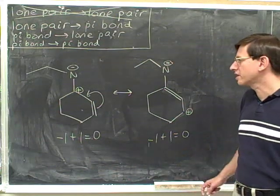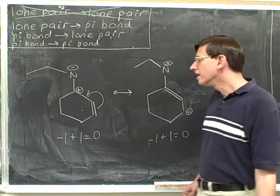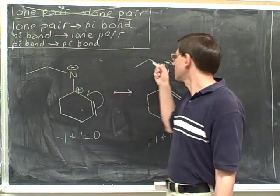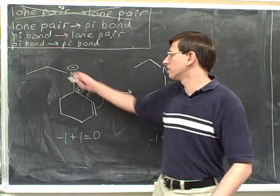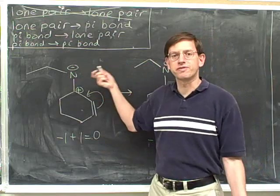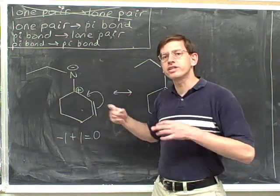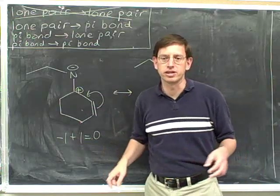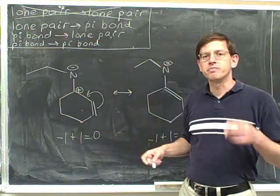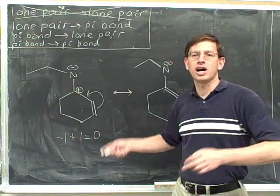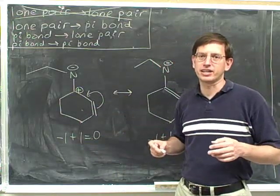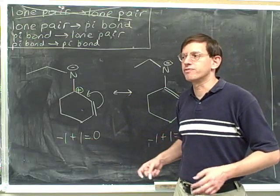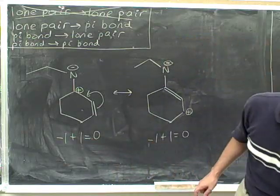One thing to watch out for here is that there were no changes needed on the negative charge on the nitrogen because there were no arrows going to or from the nitrogen. Remember only to make the changes that are dictated by your electron-pushing arrows. That's one of the main purposes of using the redraw-and-modify technique — it forces you to only make the changes you're forced to make by the electron-pushing arrows.